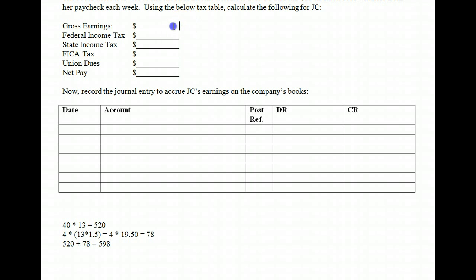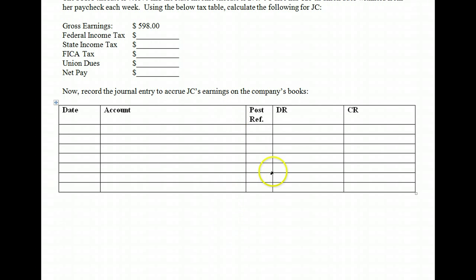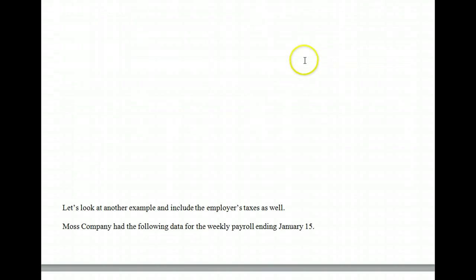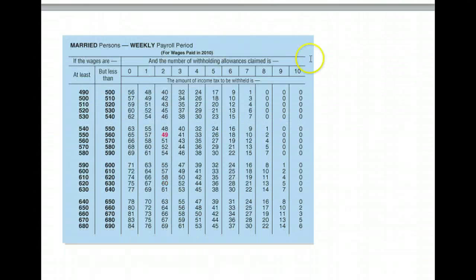So for her gross earnings, she earned $598. The next thing we have to look at is the actual federal income tax. Remember, federal income tax is calculated using the employee's W-4. As the employer, we look and see on JC's W-4 that she is claiming married and two withholding allowances, which means she has two dependents. So now it's time to look at our tax table.